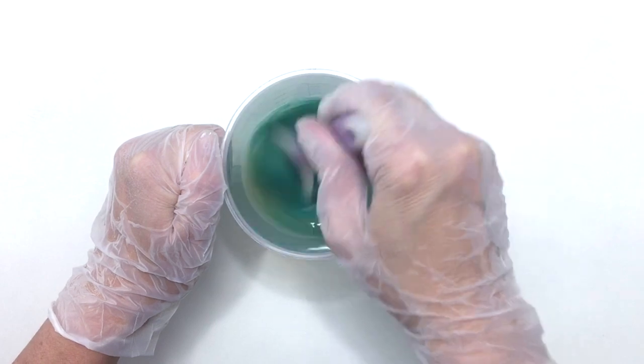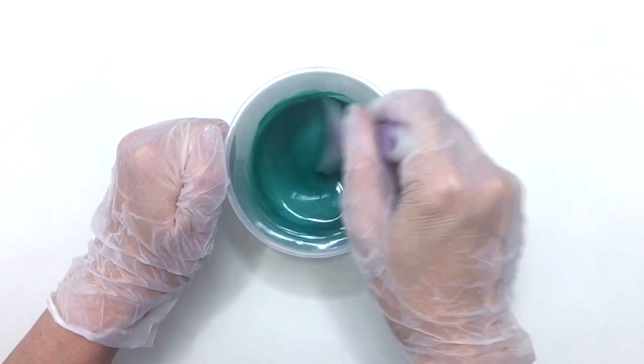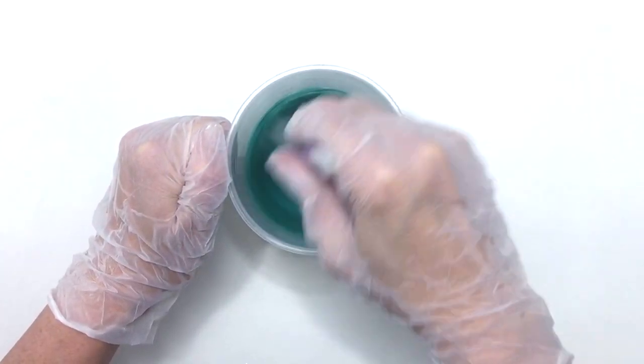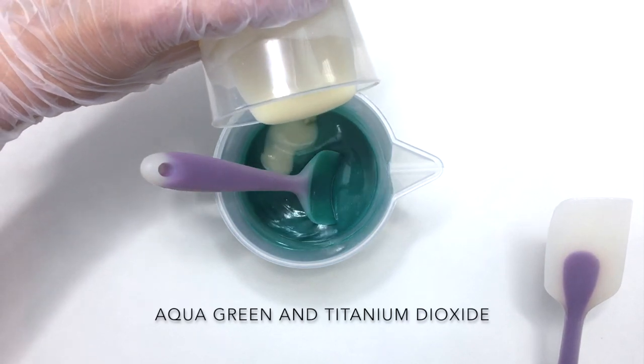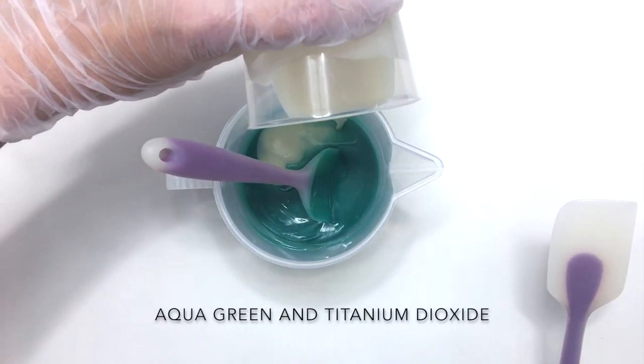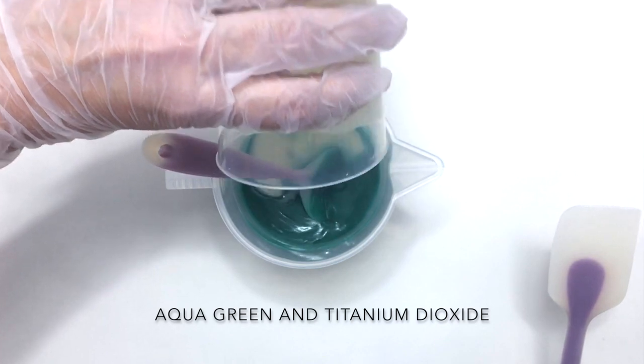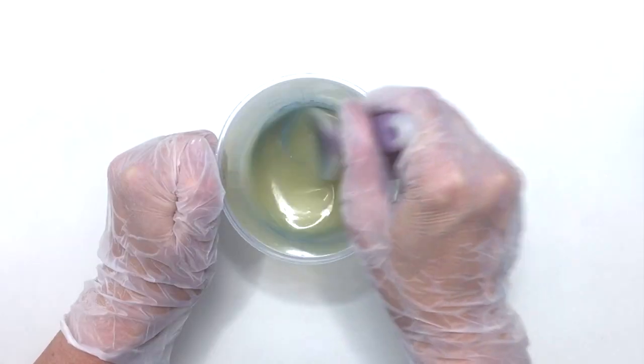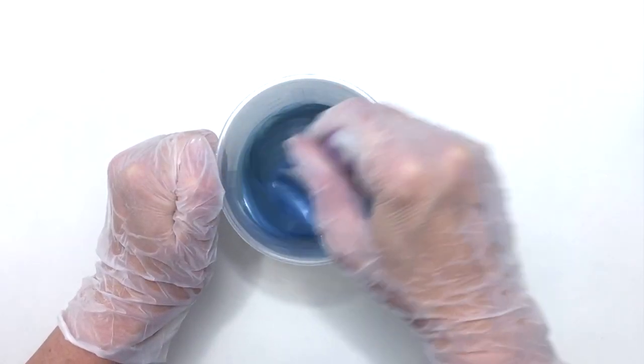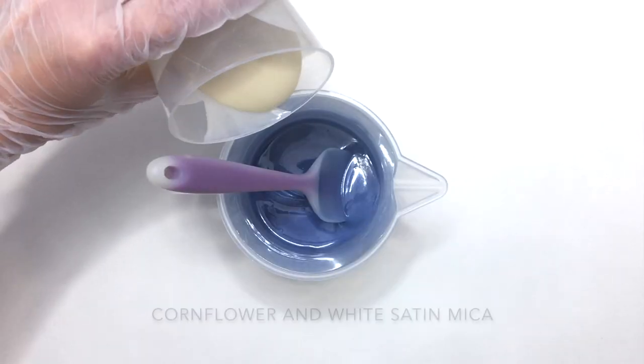Then I mix the aqua green in soap, and for that one I'll use the titanium dioxide. Finally, I'll mix up the cornflower, and I'll add the white satin mica to that.